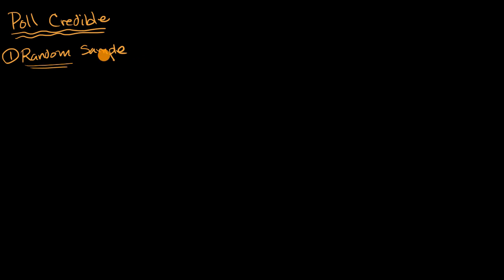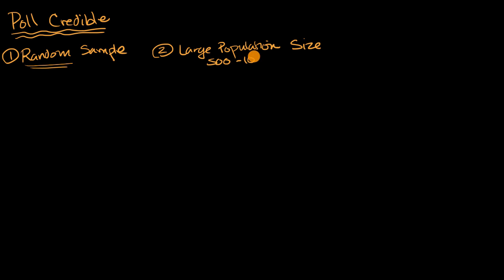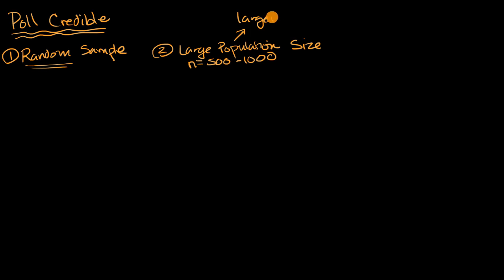The next thing you'd want when taking a survey is a large population size. Typically, it's going to be at least 500 folks, and you'll see a lot of surveys with about 500 to 1,000 participants — sometimes written as N equals 500 to 1,000. This is so you have a good chance of getting close to the true public opinion. We'll talk in a second about margin of error: the larger your sample, especially with a true random sample, the lower your margin of error will be.